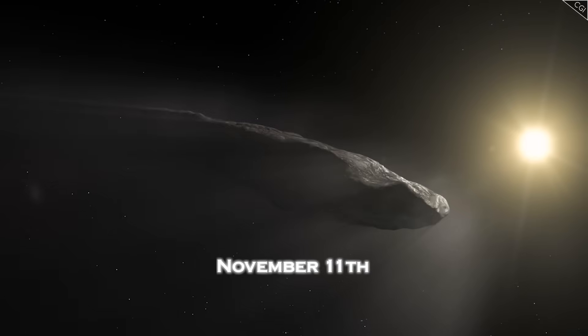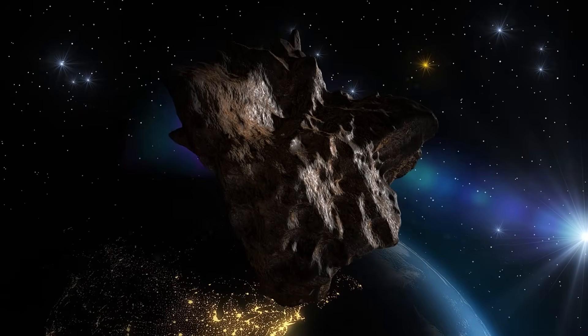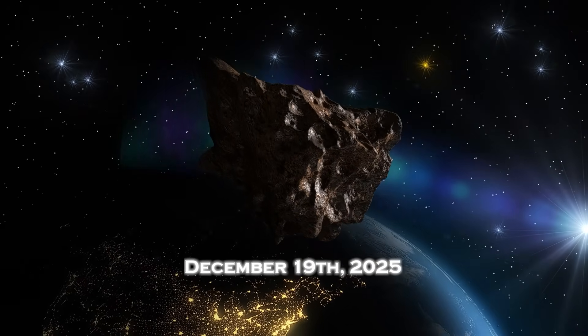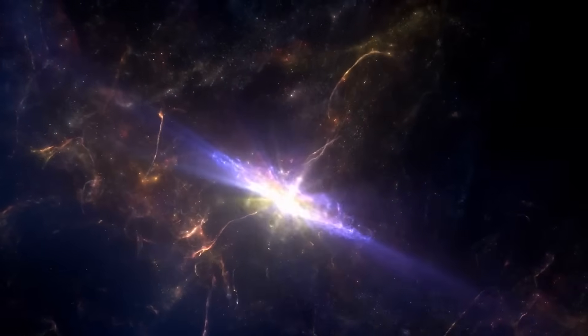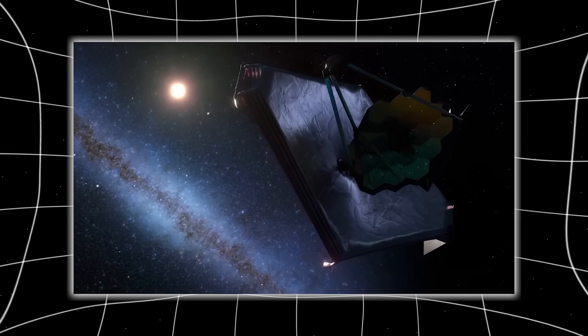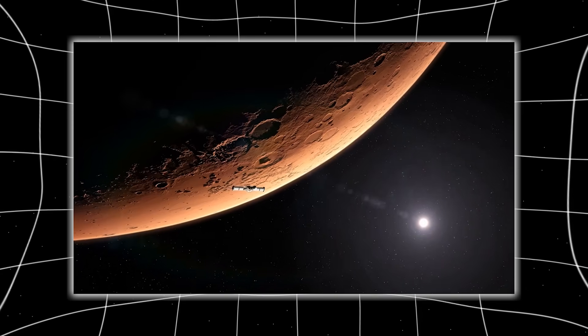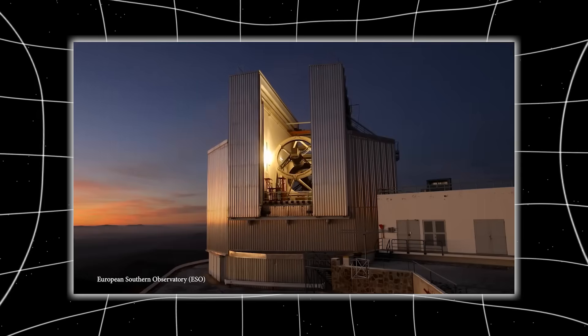As of November 11th, 3I Atlas has re-emerged from behind the sun. Now, for the next seven weeks, until its closest approach on December 19th, humanity has a once-in-a-civilization chance to observe it. Hubble will perform ultraviolet spectroscopy. Webb will analyze its molecular emissions. Mars orbiters have already imaged it during solar conjunction. Earth observatories are on full alert.